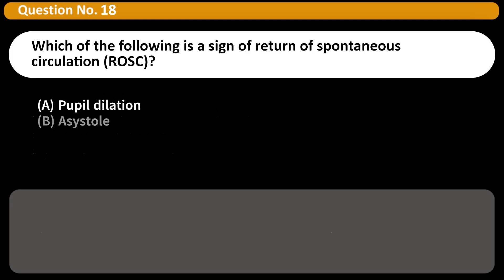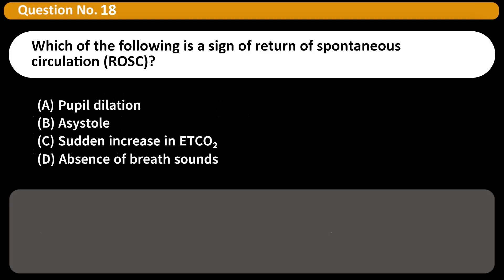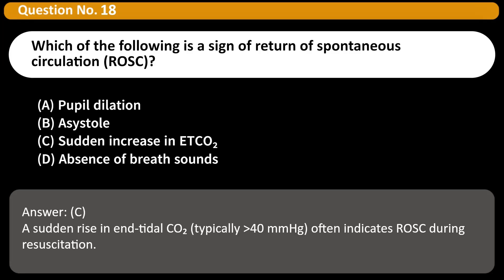Which of the following is a sign of return of spontaneous circulation (ROSC)? A. Pupil dilation. B. Asystole. C. Sudden increase in ETCO2. D. Absence of breath sounds. Answer: C. A sudden rise in end-tidal CO2, typically greater than 40 mmHg, often indicates ROSC during resuscitation.